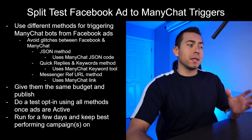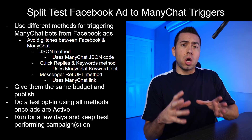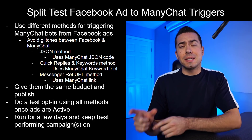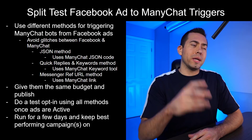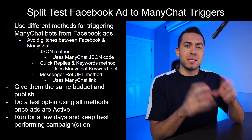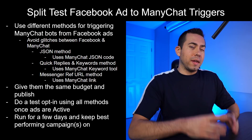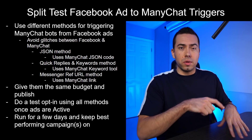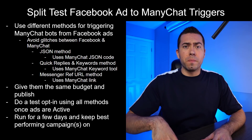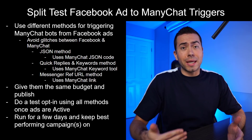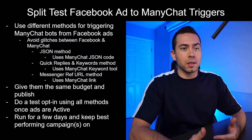Back to the JSON method — this is something inside ManyChat, it's a growth tool that gives you a code that you then copy-paste into Facebook at the ad level. There are a lot of glitches with this. The Facebook campaign objective has to be Messages, and on the ad level you usually want an image ad. We've had a lot of glitches trying to run video ads with the JSON connection, so that led us to explore other options.